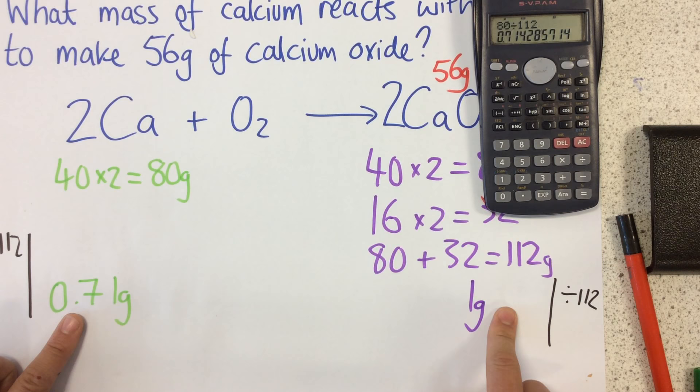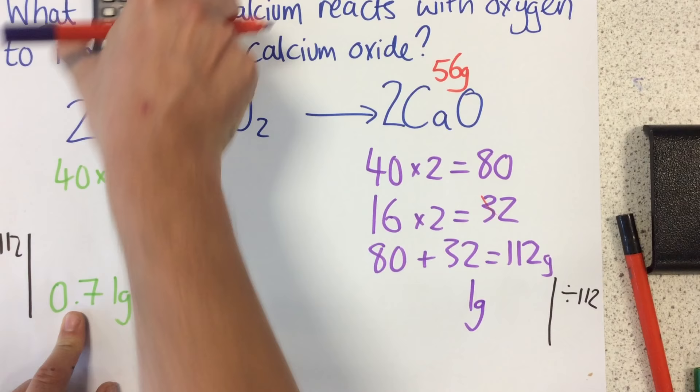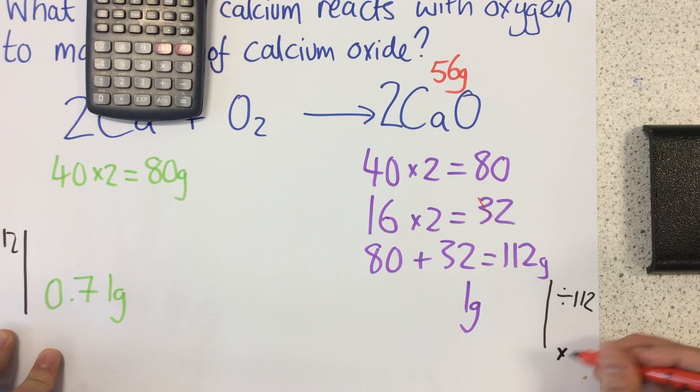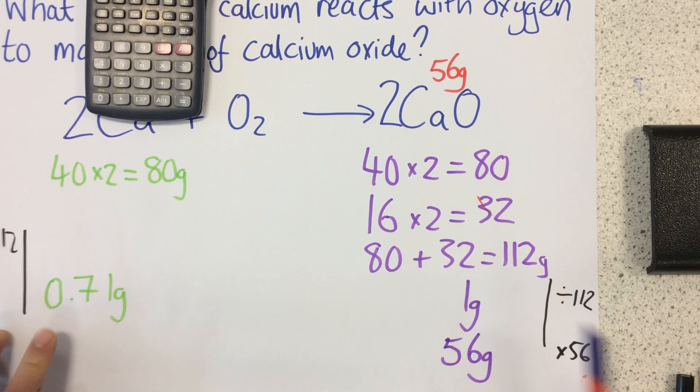But I'm not interested in making 1 gram, I'm interested in making 56 grams. So what do I have to do? Well, I have to times both of these by 56. So we can see this one is now 56 grams. So all I need to do to find my answer is times this by 56 as well.